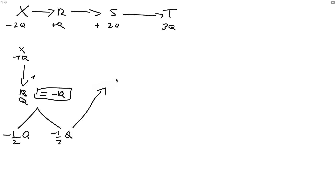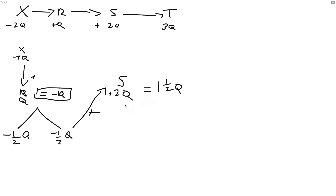Then X makes contact with S. S has a charge of 2Q. So if we add them together: 2Q plus minus half Q is 1.5Q. So the overall charge of X and S together is 1.5Q, and that's going to be shared between S and X. Half of 1.5 is 0.75, which is 3 quarters Q. So X now carries a charge of 3Q/4.